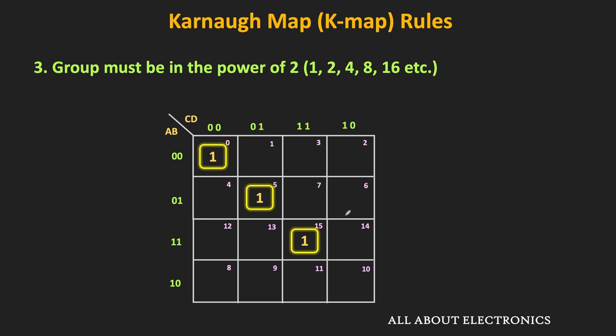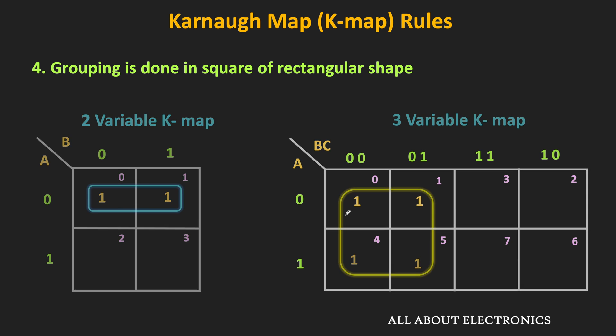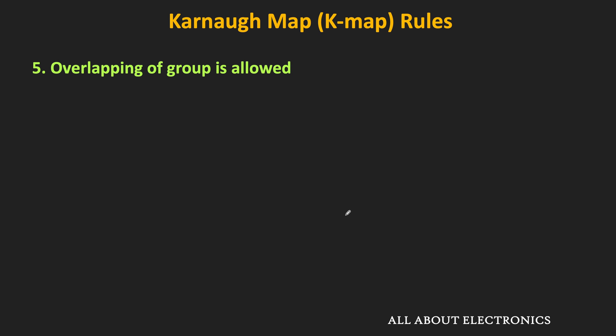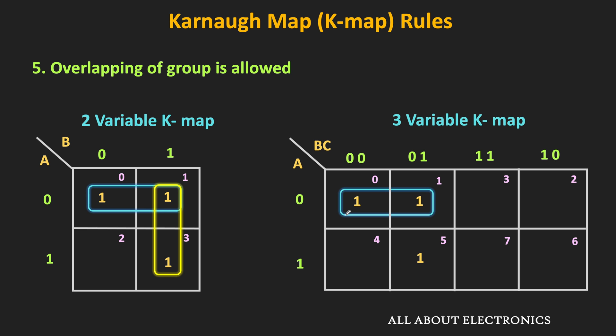The next K map rule is that grouping is done either in a square or rectangular shape — we have already seen that earlier — but grouping in any other shape is not allowed. Additionally, during the grouping, overlapping of groups is allowed. For example, in this two-variable K map, three minterms can be covered by making two overlapping groups. Such overlapping is allowed, and the same applies to three-variable and four-variable K maps.